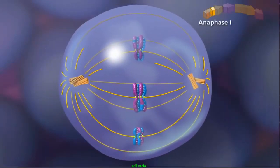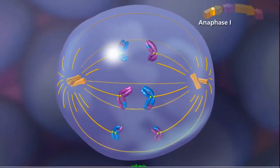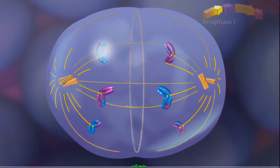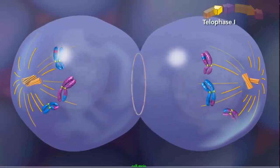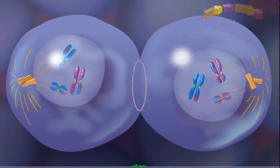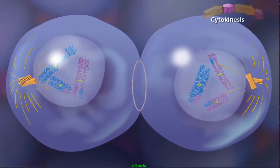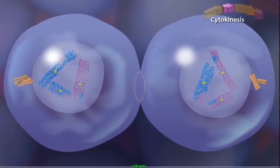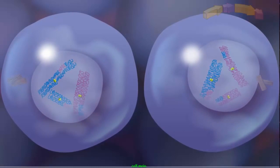In anaphase I, the homologous chromosomes separate and move toward opposite poles. Meiosis I ends with telophase I, when the chromosomes decondense and the nuclear envelope reforms. Since the final product of meiosis I is two haploid cells,